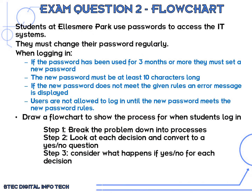Following the same steps as before, we're going to approach this the same way, but this time we'll also show inputs and outputs in the flowchart. Step one: break the problem down into processes. Then look at each decision and convert to a yes or no question. And consider what happens if yes or no for each decision.